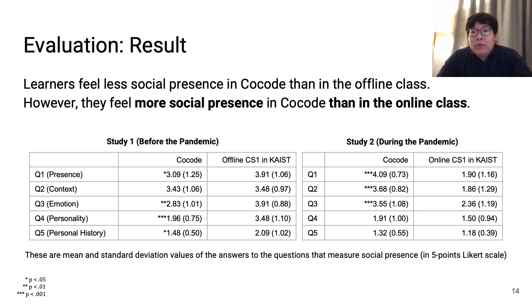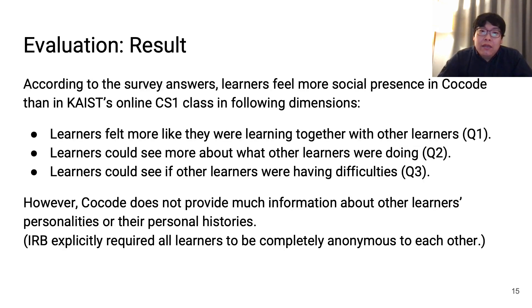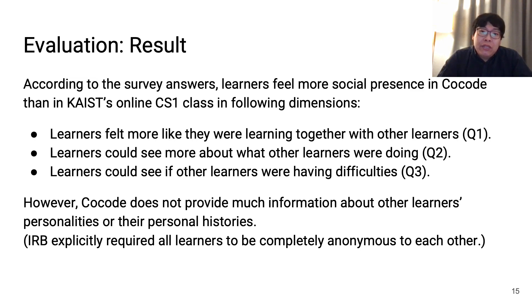The table shows the mean and standard deviation values for answers to questions measuring social presence in five different dimensions. In Study 2, learners answered that they felt significantly more social presence in CoreCode than in the online class in three dimensions: the reality of the presence, the context, and the emotion.